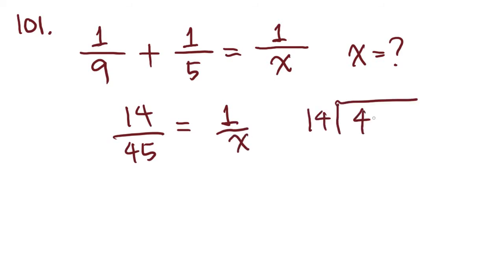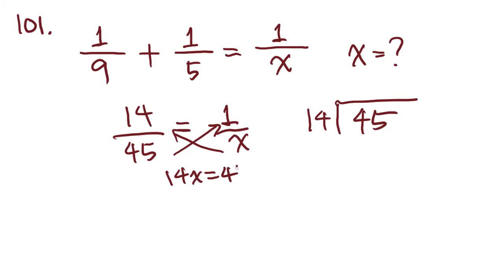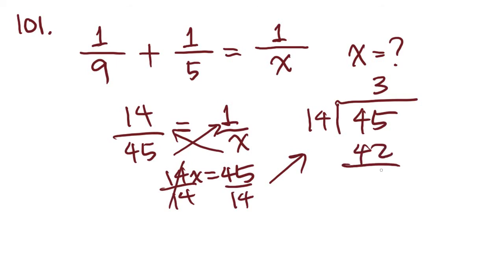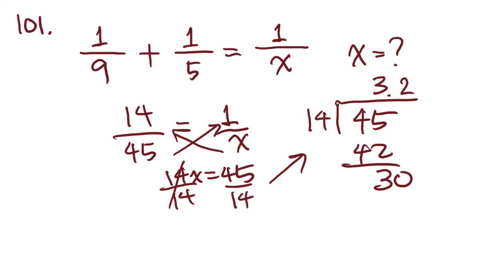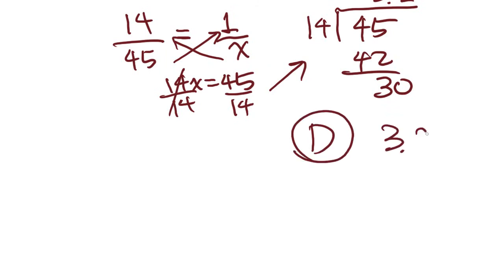Cross-multiplying gives us 14x equals 45. Solving for x, we get approximately 3.2. The closest answer choice is D, which is 3.21. Because the question said approximately, we know that we can estimate.